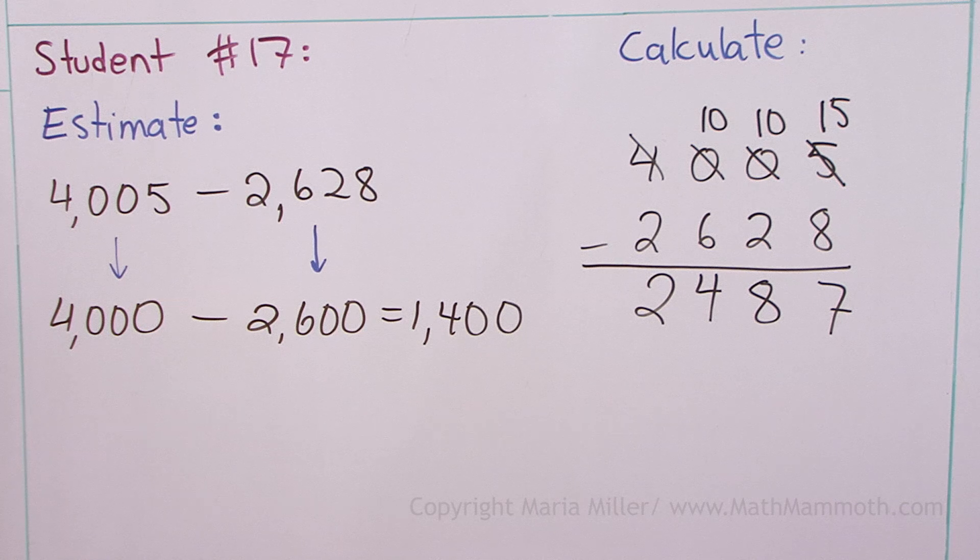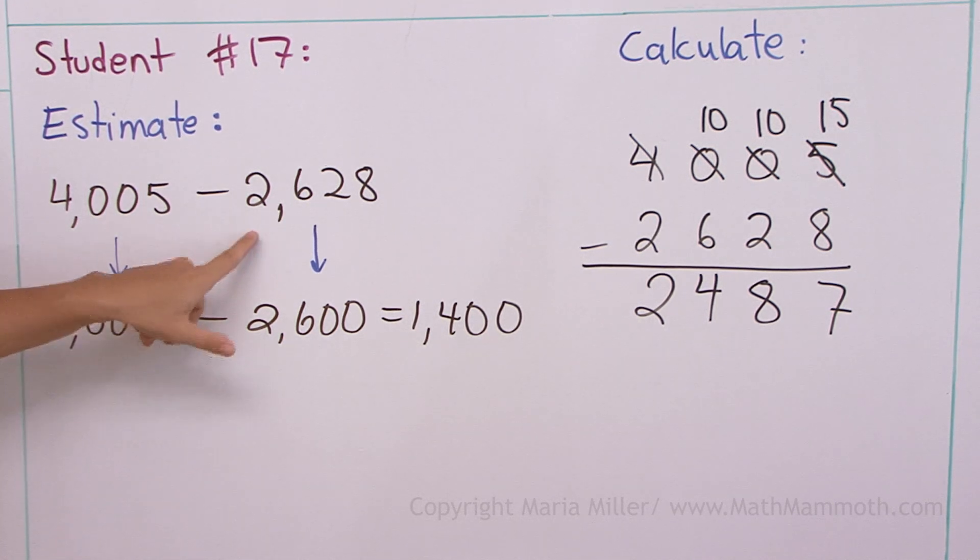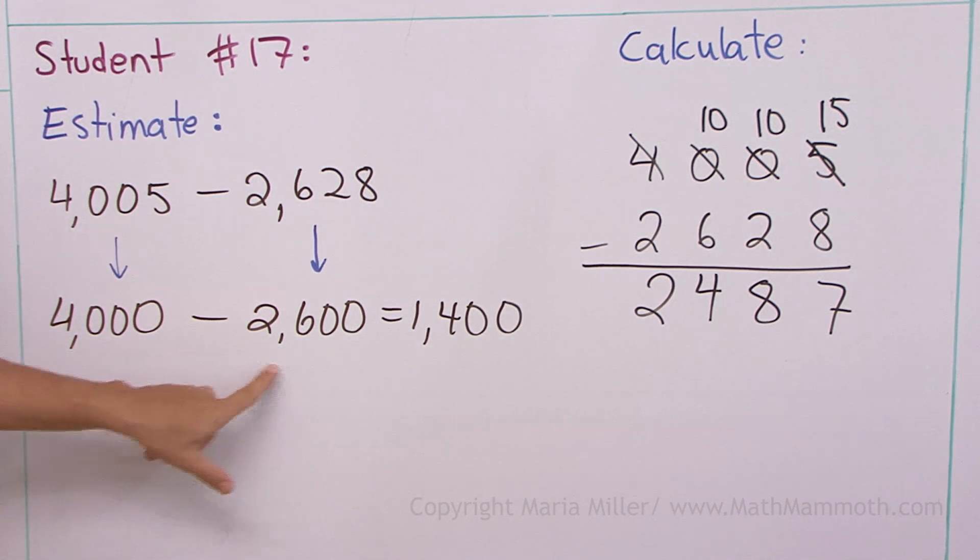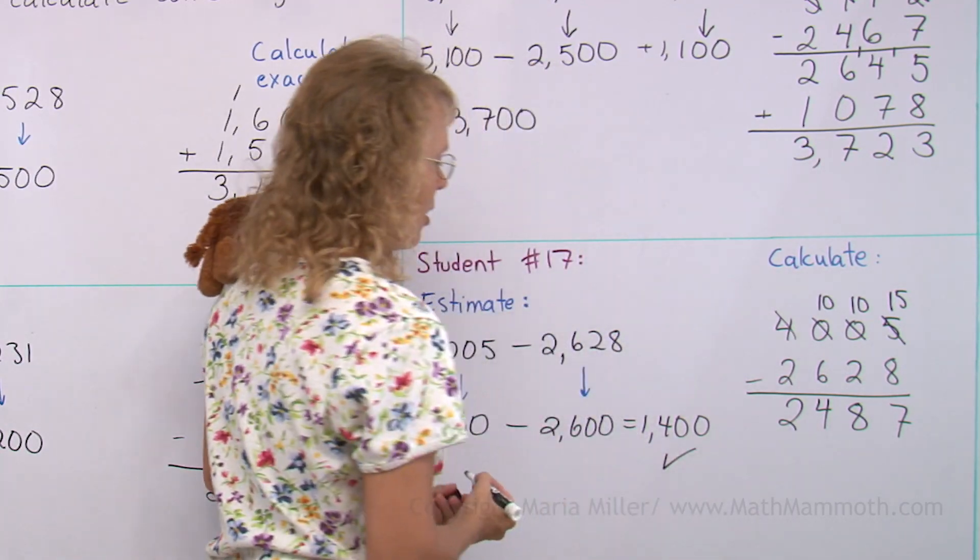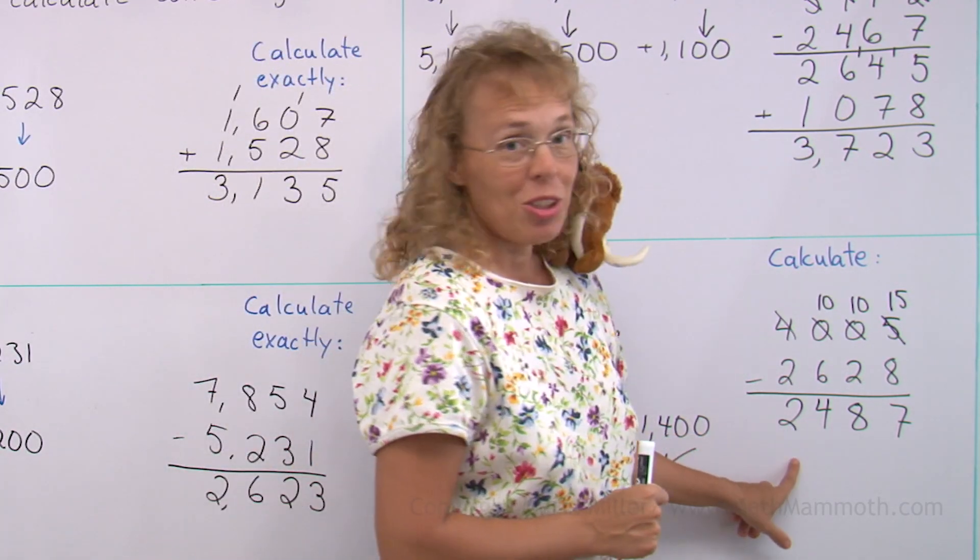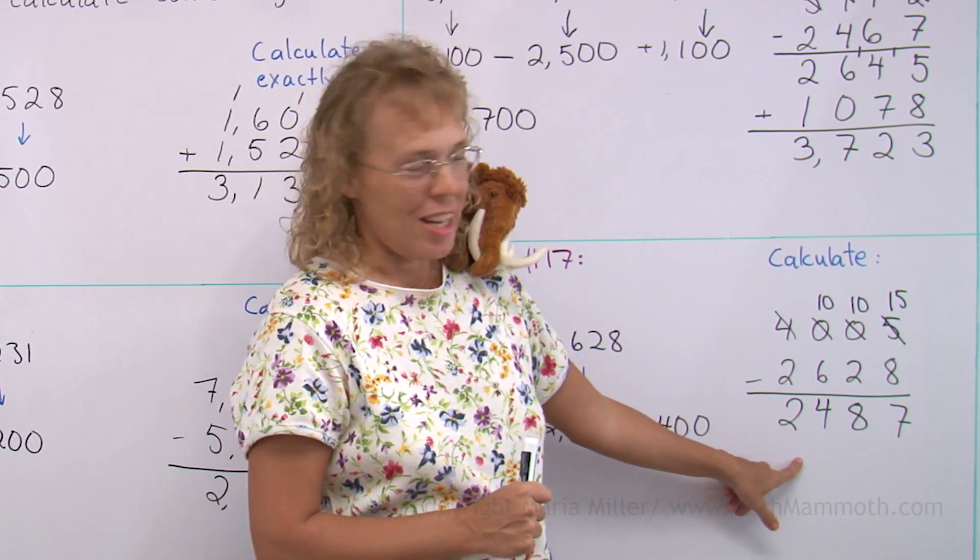Let's start checking it here with the estimation. 4005. The rounding is correct. Rounding to the nearest hundred. This one is also rounded correctly. And then subtracting. Yep. So I would say this is correct here this far. So it must be that the error is here in the subtraction.